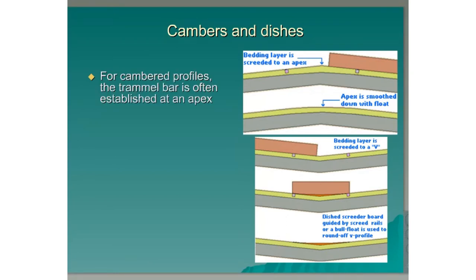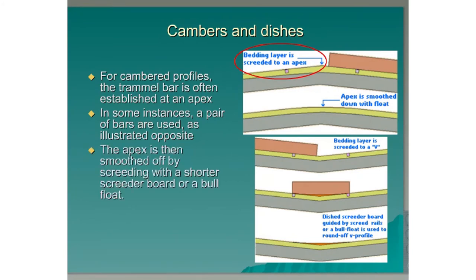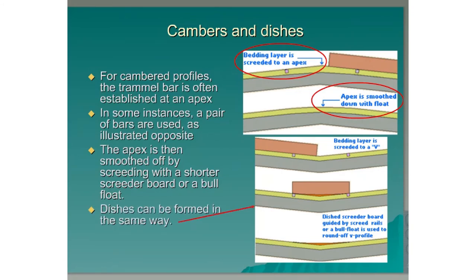For cambered profiles, the trammel bar is often established at an apex. In some instances, a pair of bars are used as illustrated. The apex is then smoothed off by screeding with a shorter screeder board or a bull float. Dishes can be formed in the same way.